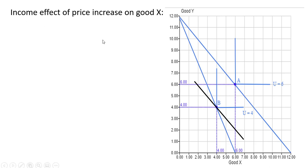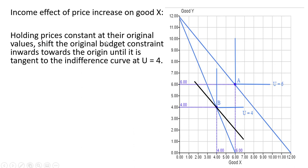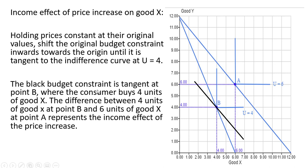Now let's look at the income effect of the price increase on good x. To get the income effect, we're basically holding prices constant at their original values and shifting the original budget constraint inwards towards the origin until it is tangent to the indifference curve at u equals 4. We take our original budget constraint — reflecting the original prices where the price of good x is 1 and the price of good y is 1 — and shift it in a parallel fashion until it touches our new indifference curve where u equals 4. It just so happens to be at point b.